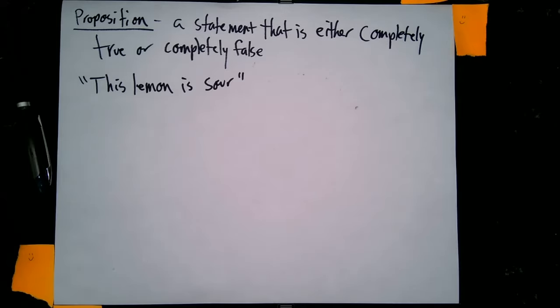Now you might argue that, well, sometimes lemons are a little bit sour. There's varying levels of sourness, and that's true, but we're talking specifically black and white, whether a lemon is sour or not. So even if it's a little sour, we'll say that's a true statement. In my case, the lemon was very sour, but it is true nonetheless. So because "this lemon is sour" is either a statement that is true or a statement that is false, we say that it is a proposition.